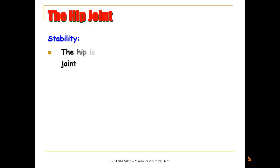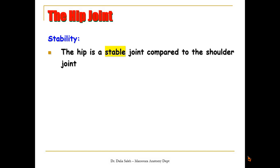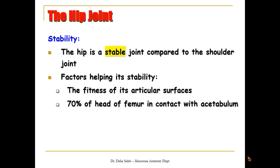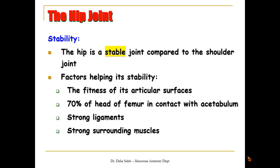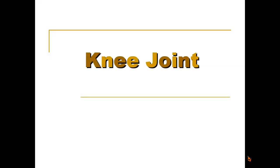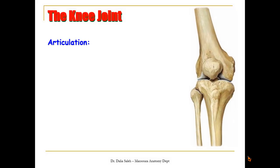For the stability of the hip joint: compared to the shoulder joint, it is a more stable joint. Factors helping its stability include the bony factor — the fitness of its articular surfaces — where almost 70% of the head of the femur is in contact with the acetabulum. It is also surrounded by strong ligaments and strong muscles. One of the main factors that help its stability is the suction force inside the joint due to atmospheric pressure.